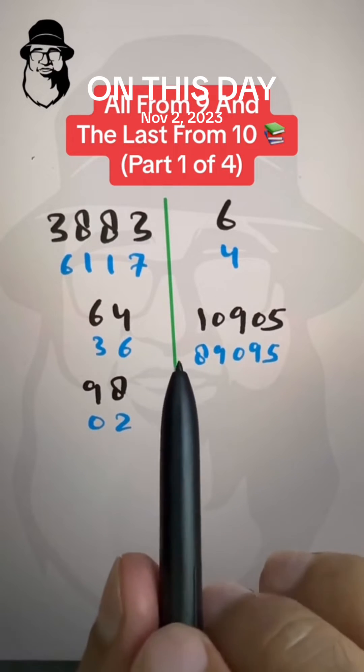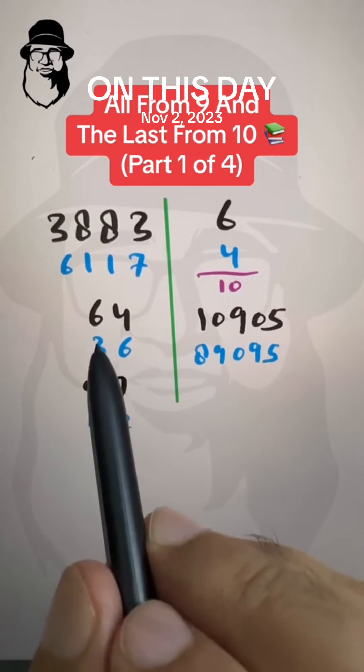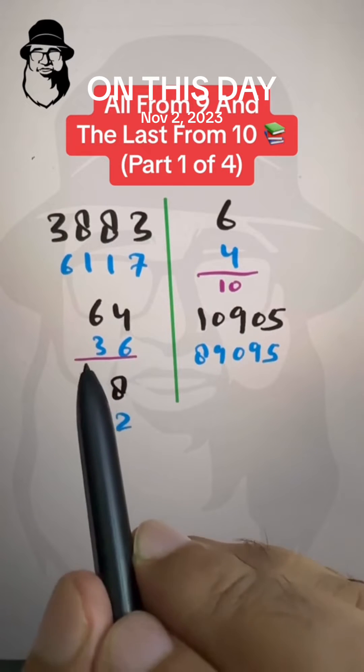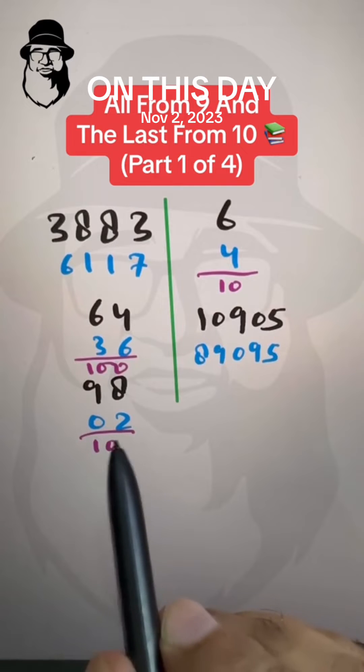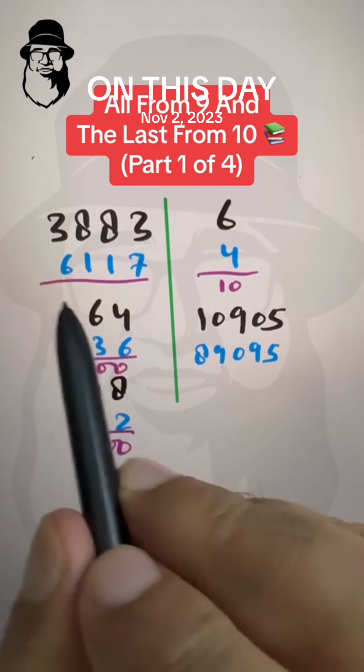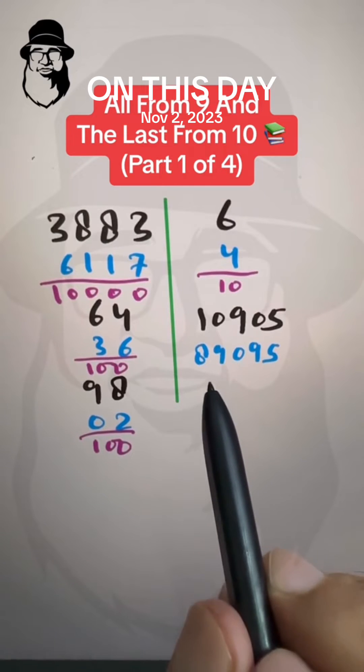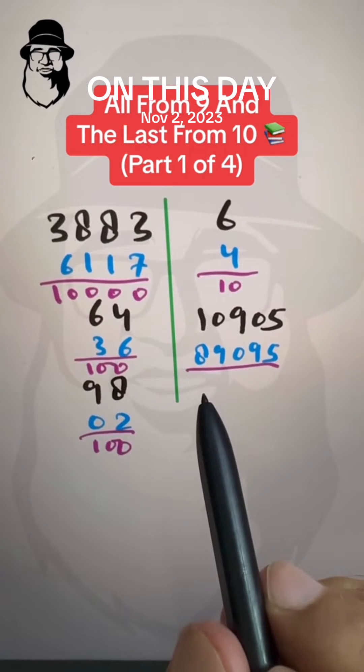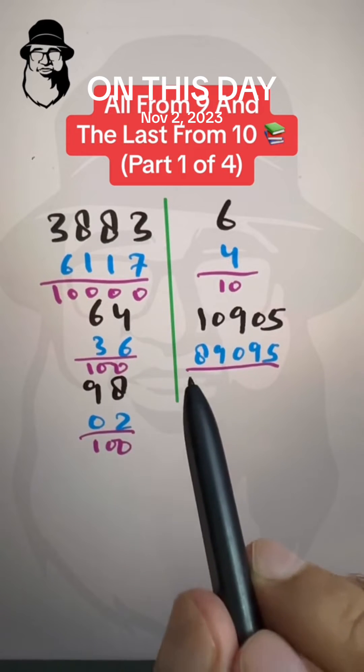Now, if we notice here, if we add these 2, 6 plus 4 is 10. Then here, 64 plus 36 is 100. 98 plus 2 is also 100. And you will see in all the cases, the formula all from 9 and the last from 10 subtracts numbers from the next highest base number that is power of 10.